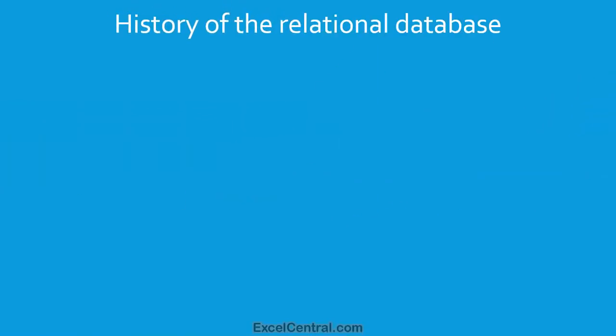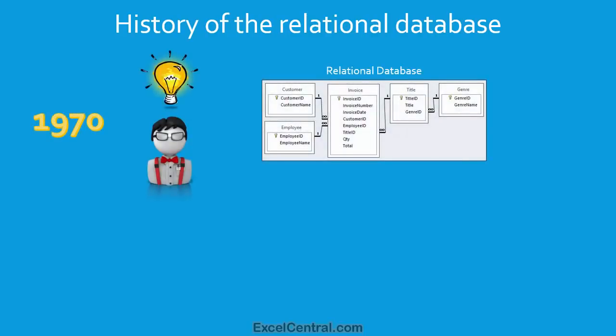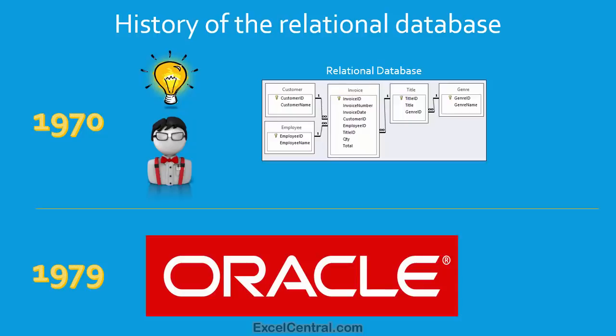Dr. E.F. Codd, an IBM scientist, invented the Relational Database in the early 70s. In 1979, Oracle released their first commercial Relational Database product. By the mid to late 1990s, Relational Databases had come of age. Almost all big corporations used a Relational Database to store their data.